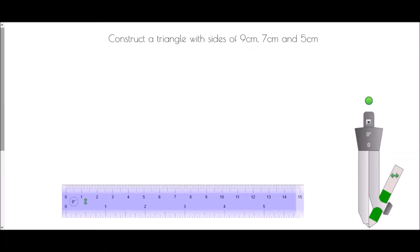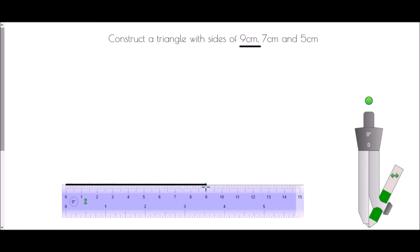The last type of construction we're going to look at is constructing a triangle with sides of 9 centimeters, 7 centimeters and 5 centimeters. This time we haven't been given any angles — just the three different sides — so I haven't been given a protractor; instead I've been given a compass. A compass is used whenever we are trying to construct a triangle where we know the three sides. As before, use the longest side as the base of your triangle, so we'll draw the 9 centimeter side at the bottom.